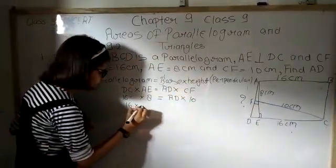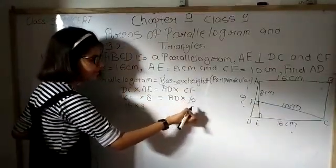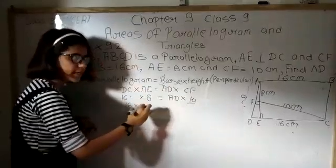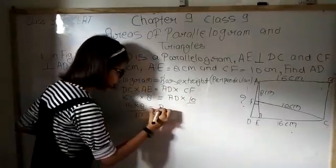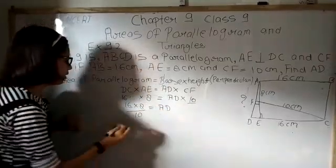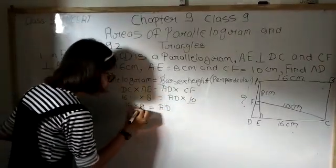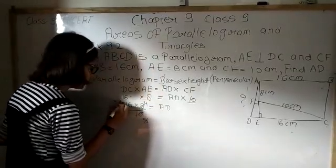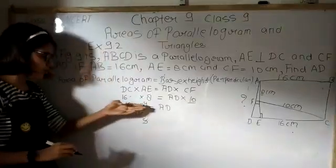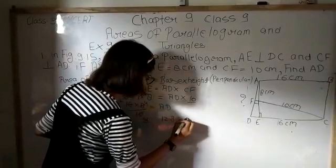Here we'll write 16 into 8. Here 10 is in multiply. When it will come here it will transfer. So it will be in divide. Equals to AD. Let us cancel it. 5 times, 4 times. This 5 by 3.2 times. 3.2 into 4 equals to 12.8 equals to AD.